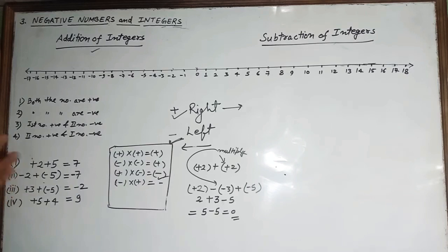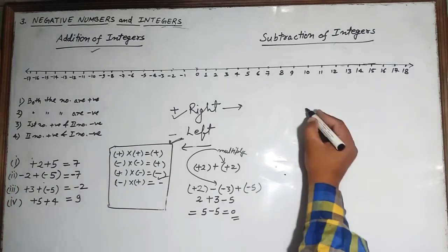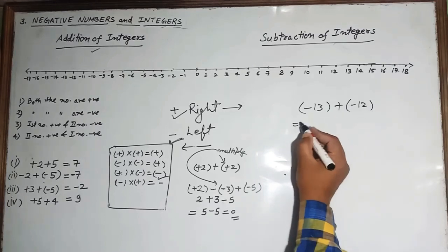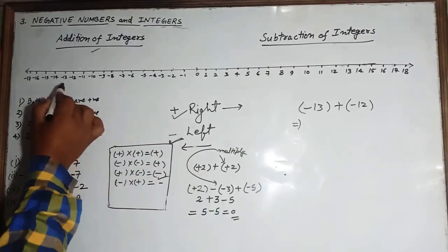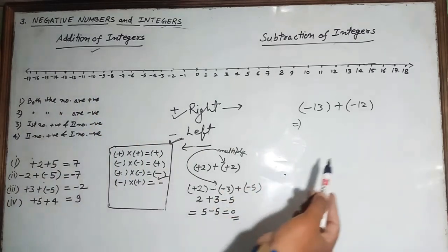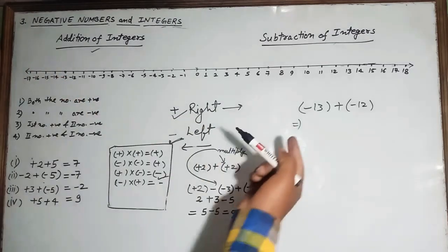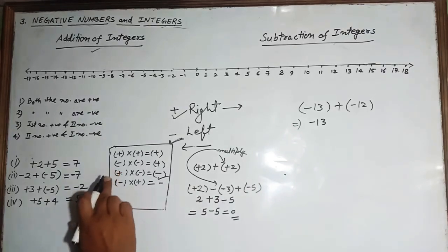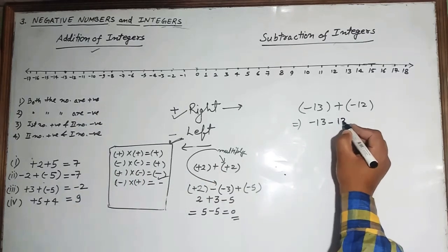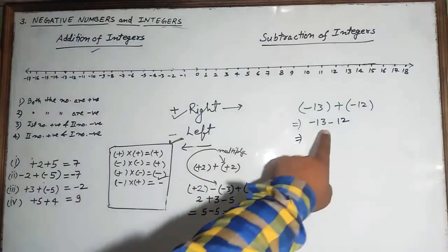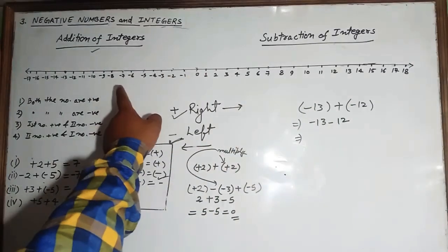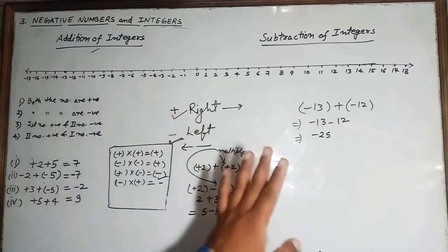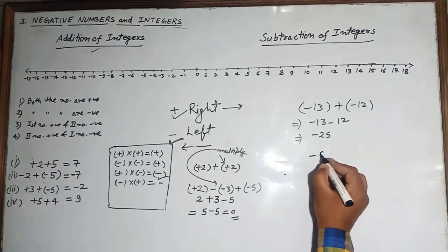Let's look at more addition examples. For minus 13 plus minus 12: opening the bracket, plus into minus gives minus, so it becomes minus 13 minus 12. Both numbers are negative, so we move further left on the number line. The answer is minus 25.